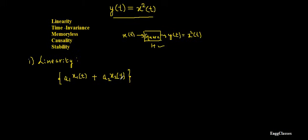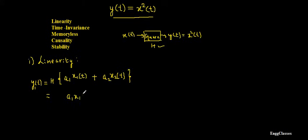I give this combined input to the system of operator h to get output y1(t). Since the system squares whatever is fed in, and the input is a1·x1(t) + a2·x2(t), the output y1(t) = [a1·x1(t) + a2·x2(t)]².